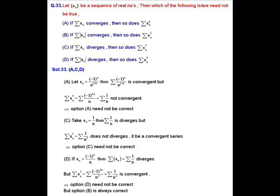Solution of question number 33. In this question we have a sequence a_n of real numbers and we have to check the given options. Option B is correct because we know if the modulo series is convergent then the squared series is also convergent — that is, if summation |a_n| is convergent, then summation a_n² is also convergent. So option B is correct.